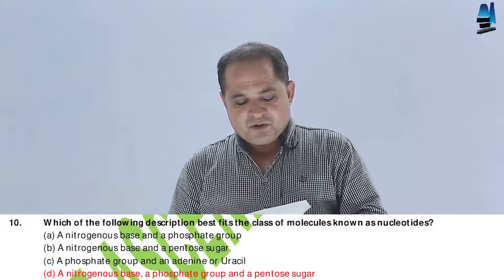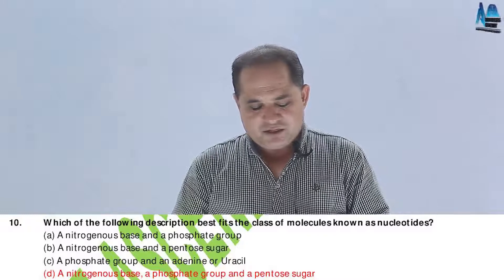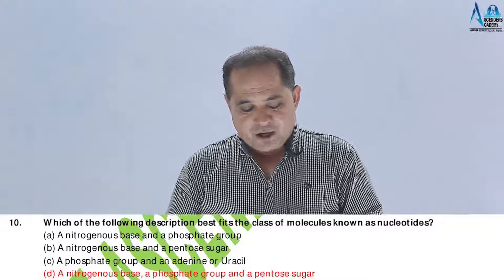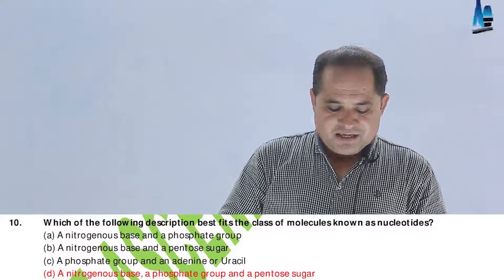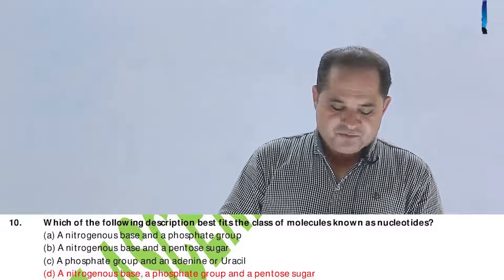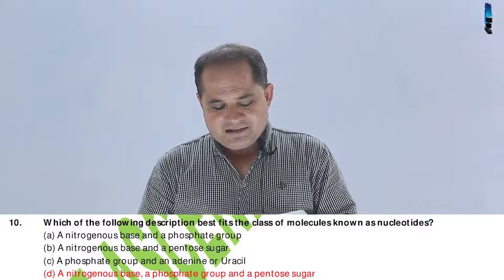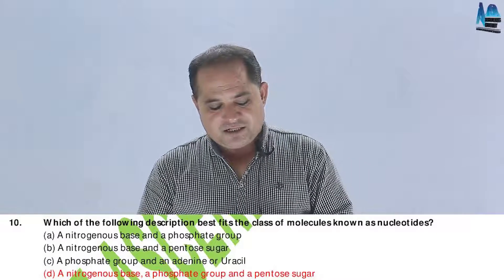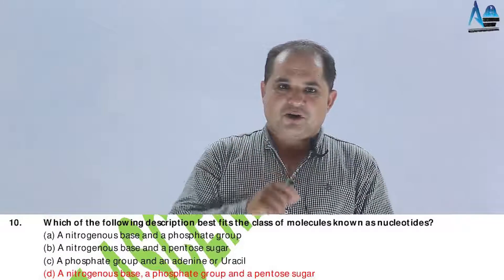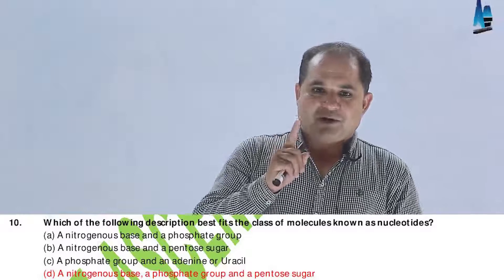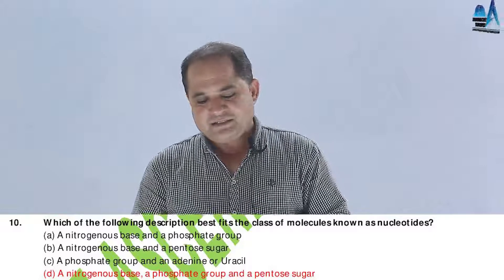Question number 10. Which description best fits the class of molecules known as nucleotides? Option A, a nitrogenous base and a phosphate group; B, a nitrogenous base and a pentose sugar; C, a phosphate group and adenine or uracil; D, a nitrogenous base, a phosphate group, and a pentose sugar. A nucleotide has three components: pentose sugar, nitrogenous base, and phosphate group. Answer should be D.